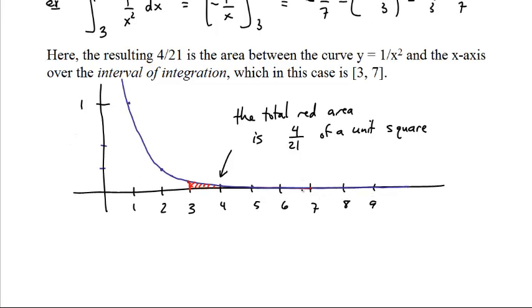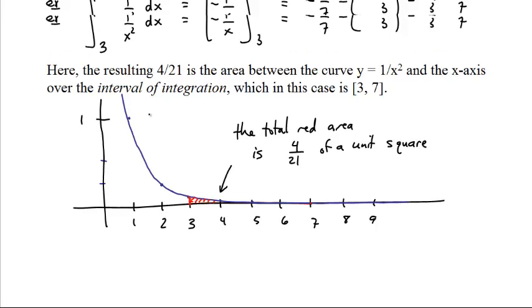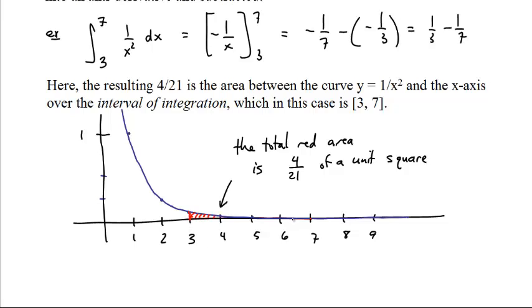But still, you graph this, and the integral is from 3 to 7. So all the area from 3 up to 7. This skinny little thing has 4 21sts of a unit squared area. Now, the unit squares are weird, because this is 1 here, and this is 1 here. So this gigantic rectangle is actually a square, because the scales are different for the vertical and horizontal axes, but this little bit is 4 21sts of that.